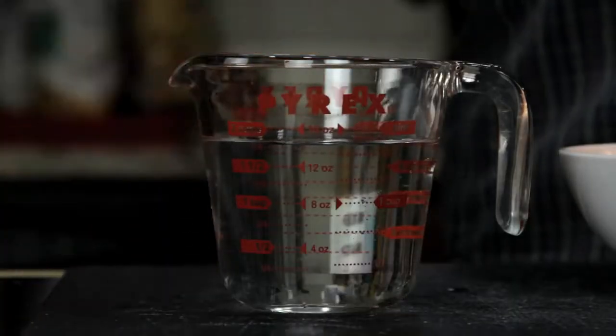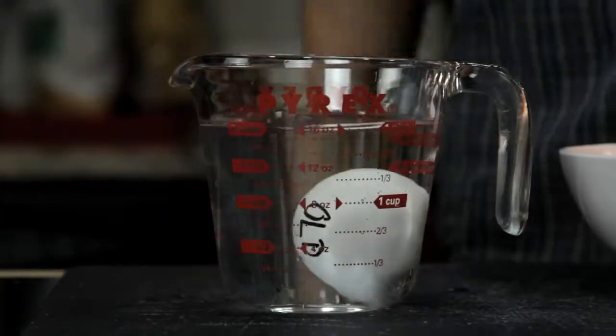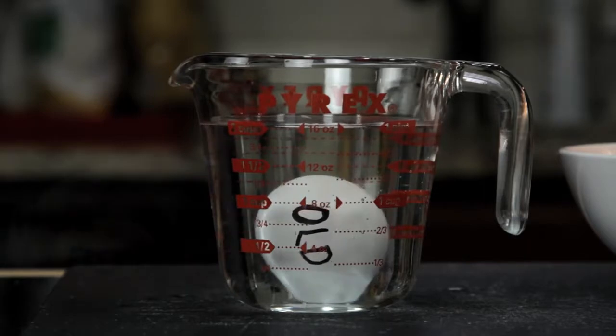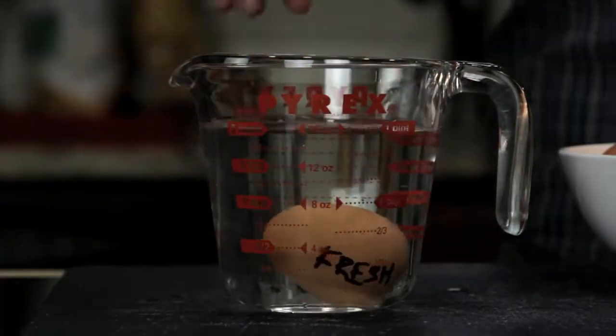You can also tell how fresh an egg is by carefully putting it into a cup of water. As an egg ages, the air pocket in the fat end is going to get bigger and bigger, which will make the egg stand upright, or sometimes even float. A really fresh egg will sink and lie flat on its back, like this.